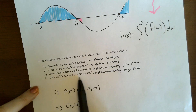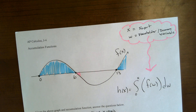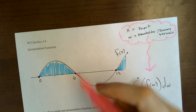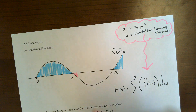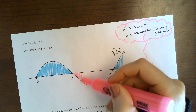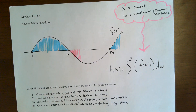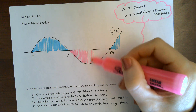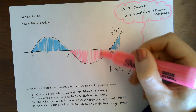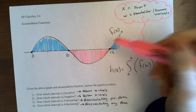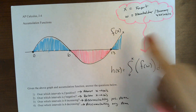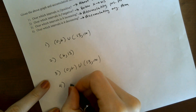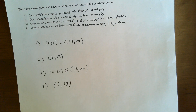Now, over which intervals is h decreasing — accumulating negative area? So after 6, we started accumulating negative area. Adding negatives means decreasing. So adding more negative area, still decreasing, more and more negative area. And then at 13, we start adding on positive area. So the answer here is from 6 to 13.